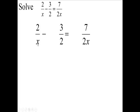Now, the denominator here is x. The denominator here is 2. And the denominator here is 2x. So, what is the least common denominator for these? 2x is the least common denominator.